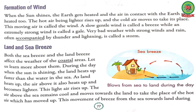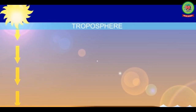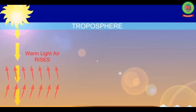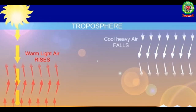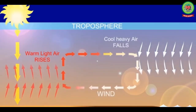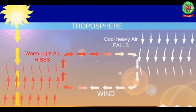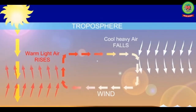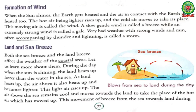Formation of wind: when the sun shines, the earth gets heated and the air in contact with the earth also gets heated. The sun heats up the surface of the earth, the air near the surface becomes hot and rises up, because hot air is lighter than the cold air. The cold air moves to take its place, and this moving air is called the wind.